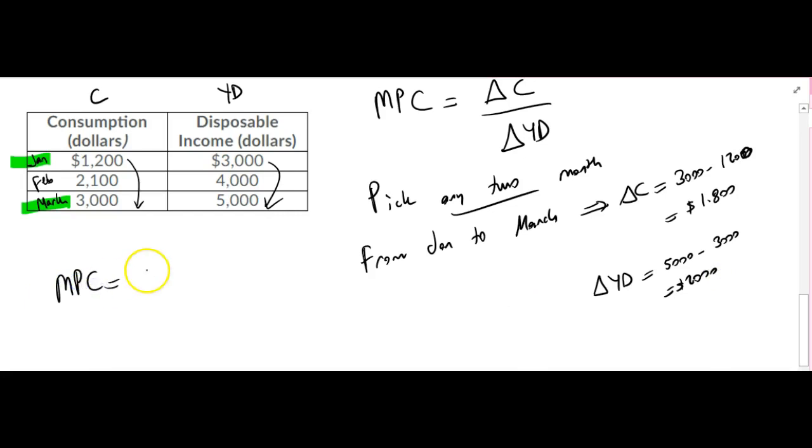My MPC is going to be equal to change in C divided by change in disposable income. I plug the numbers in here. I have $1,800 in the numerator, $2,000 in the denominator, and I get 0.9.